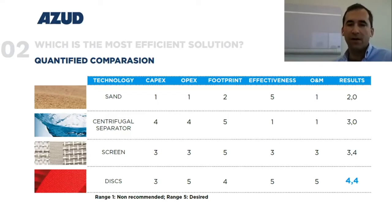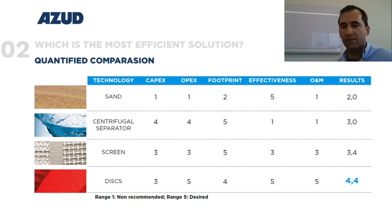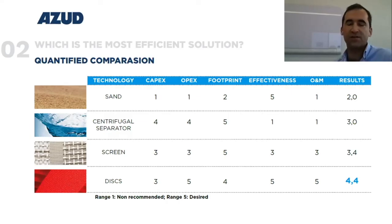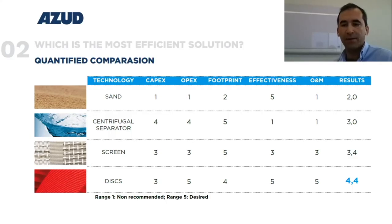There is also the risk that part of the media will go out to the drain. In terms of operational expenses, the disc filter requires no special tools and is very easy to maintain. It has continuous operation during backflush, whereas the media filter interrupts the filtration phase during backflush. Changing the media of a media filter is very difficult and tedious — it could even take days depending on the size of the installation. In the overall scoring, the best solution is disc filtration technology.